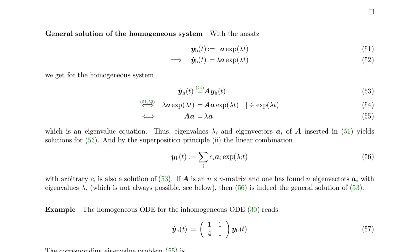The second step is to find a general solution of the homogeneous system. Using the ansatz yh = A times exponential(λt), the derivative is λ times A times exponential(λt). From the homogeneous differential equation it follows that λA·exp(λt) = matrix A times A·exp(λt). Dividing by exp(λt), which is always positive, we get an eigenvalue equation. Once we have the eigenvectors and eigenvalues, the solutions are simply the eigenvector times exp(eigenvalue × t).